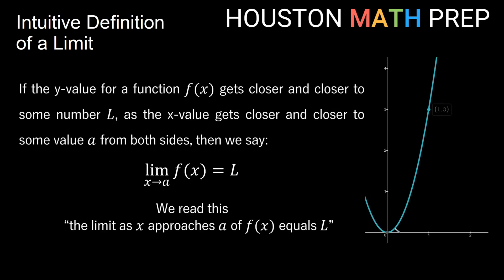I have my parabola here graphed, and it goes through the point (1, 3). As I approach this point from the left side on the graph, I am approaching an x value of 1 and a y value of 3. The same thing happens if I approach from the right side — I approach an x value of 1 from the other direction, but I'm still approaching a y value of 3. So the limit as x approaches 1 of our function is 3. Remember, the limit is actually the y value.